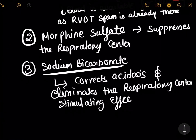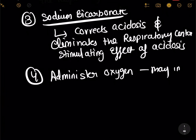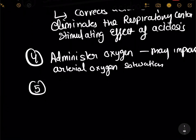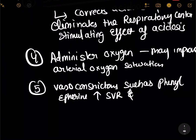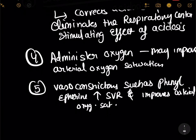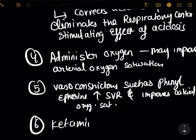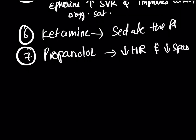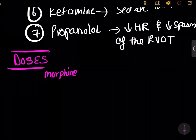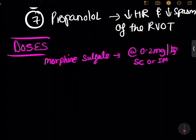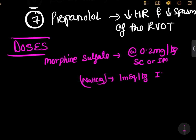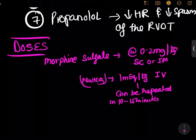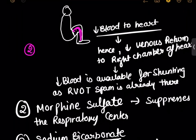We administer oxygen to improve arterial oxygen saturation, and vasoconstrictors like phenylephrine, which increase systemic vascular resistance and improve arterial oxygen saturation. Sixth, we give ketamine, which helps in sedating the patient. Propranolol, being a beta-blocker, decreases heart rate and spasm of the right ventricular outflow tract. The doses: morphine sulfate is given at 0.2 mg per kg subcutaneous or IM; sodium bicarbonate is given at 1 milliequivalent per kg IV, and can be repeated every 10 to 15 minutes.